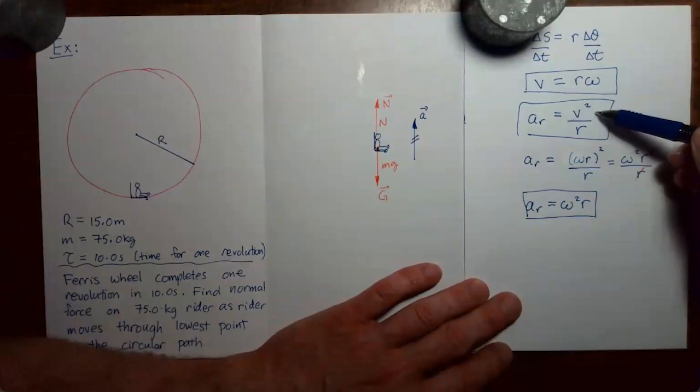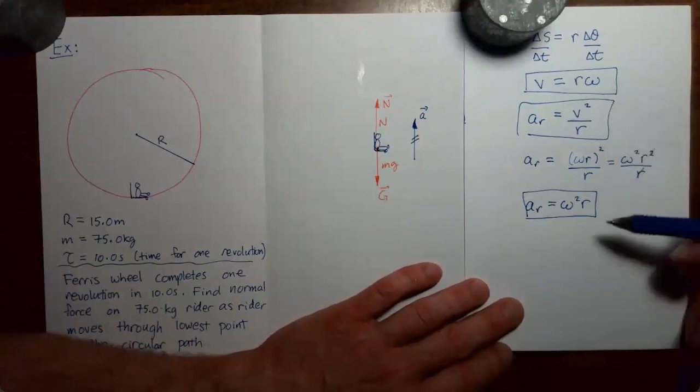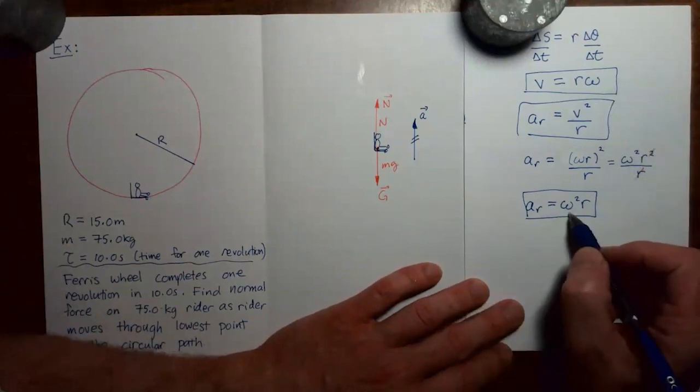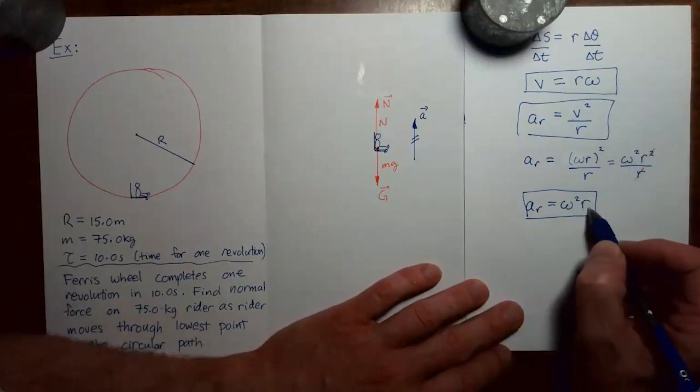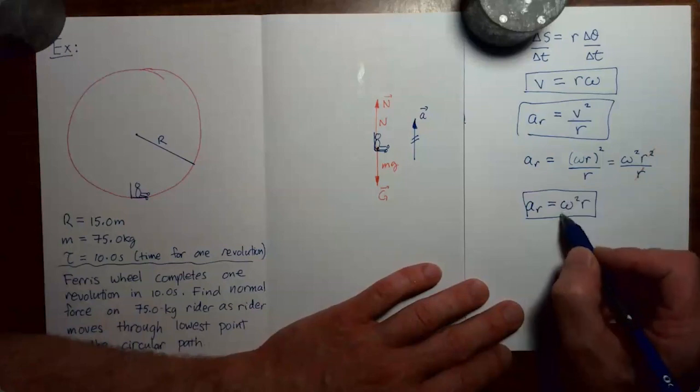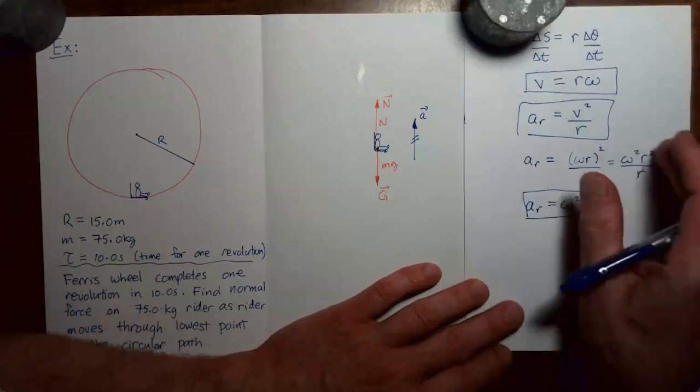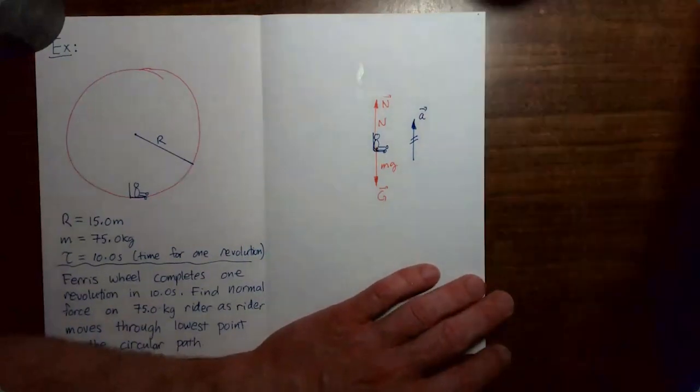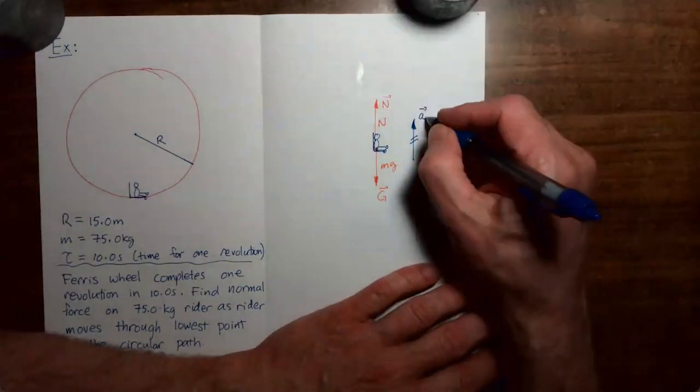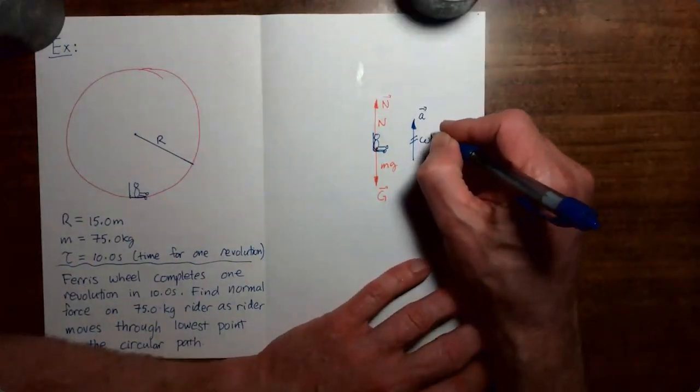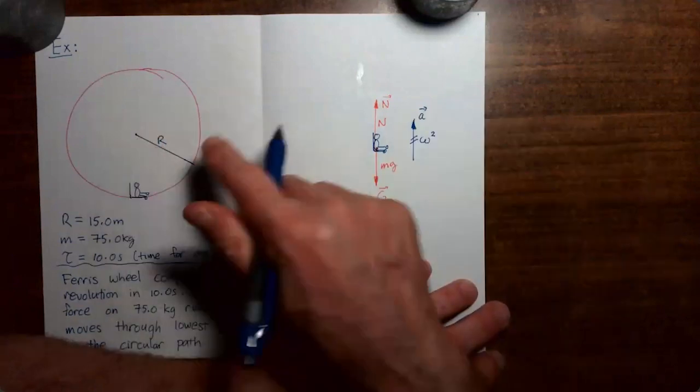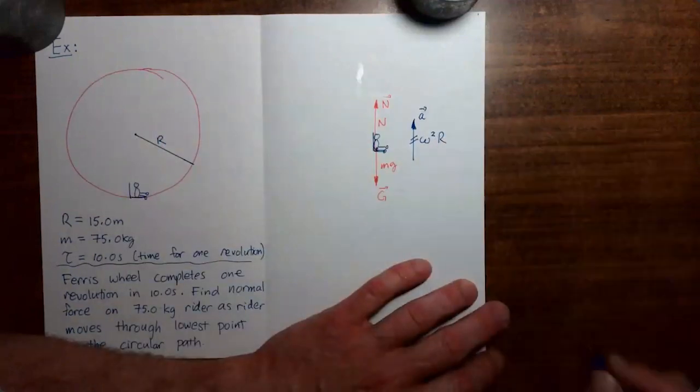One way we can get the magnitude of the acceleration is the square of the speed divided by the radius. And the other way is the angular velocity squared multiplied by the radius. I'm going to use the second formula. So I'm going to go into the figure now and put in that the magnitude of this acceleration vector is the angular velocity squared multiplied by the radius of the circle that the rider makes.